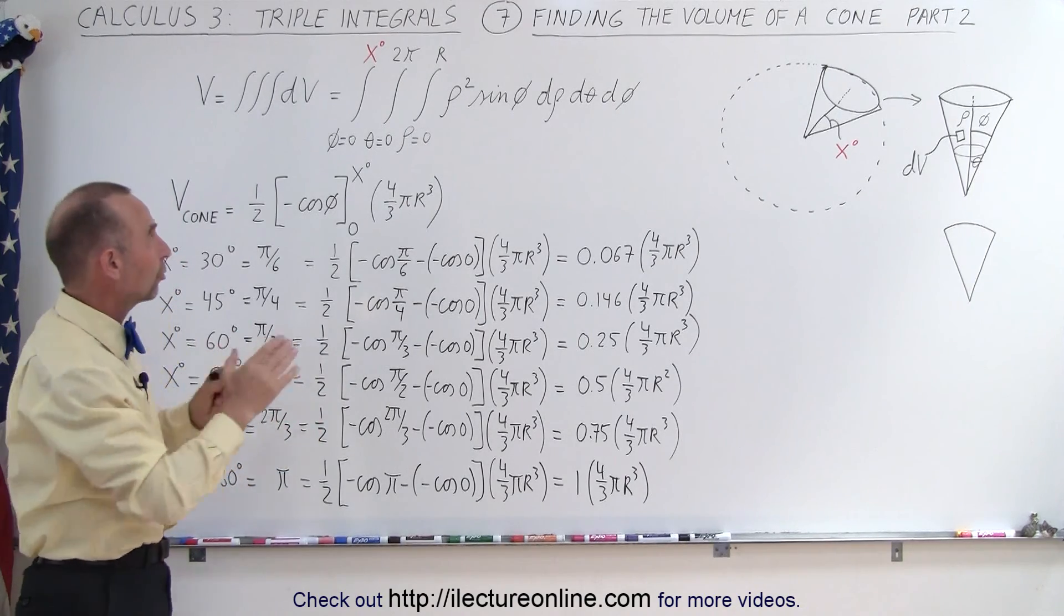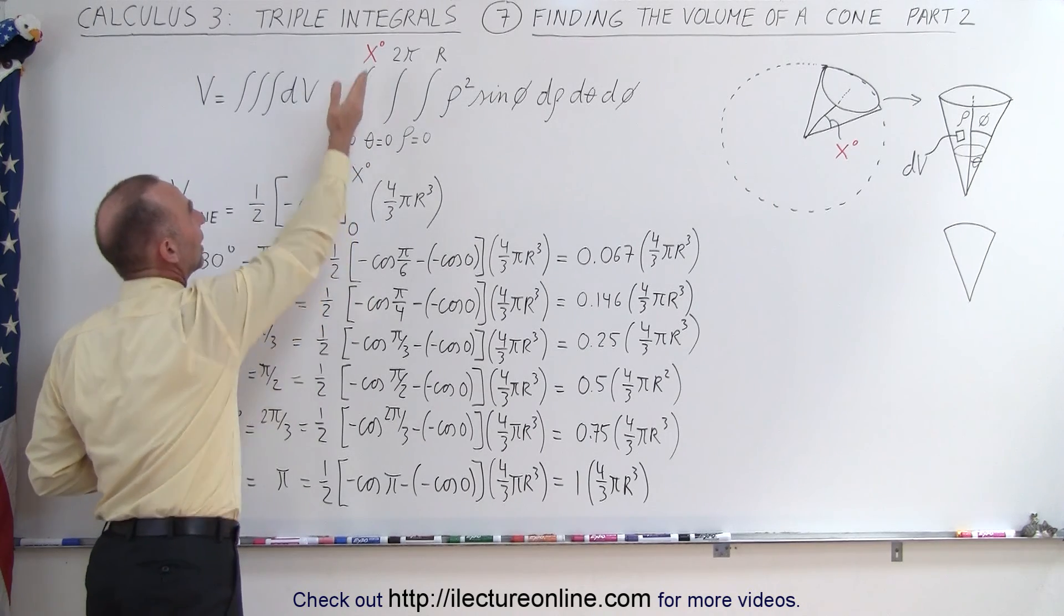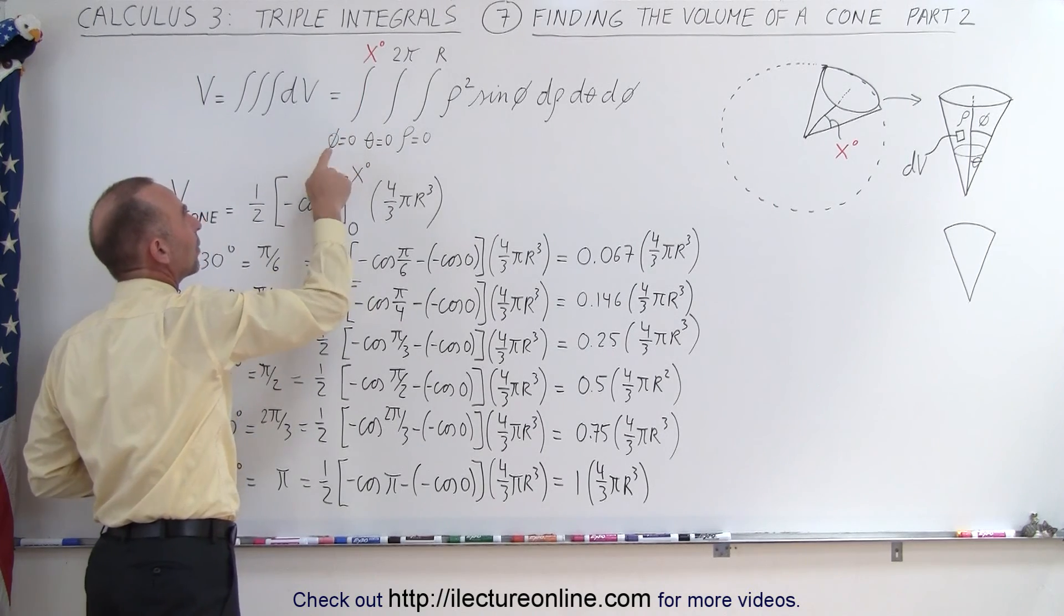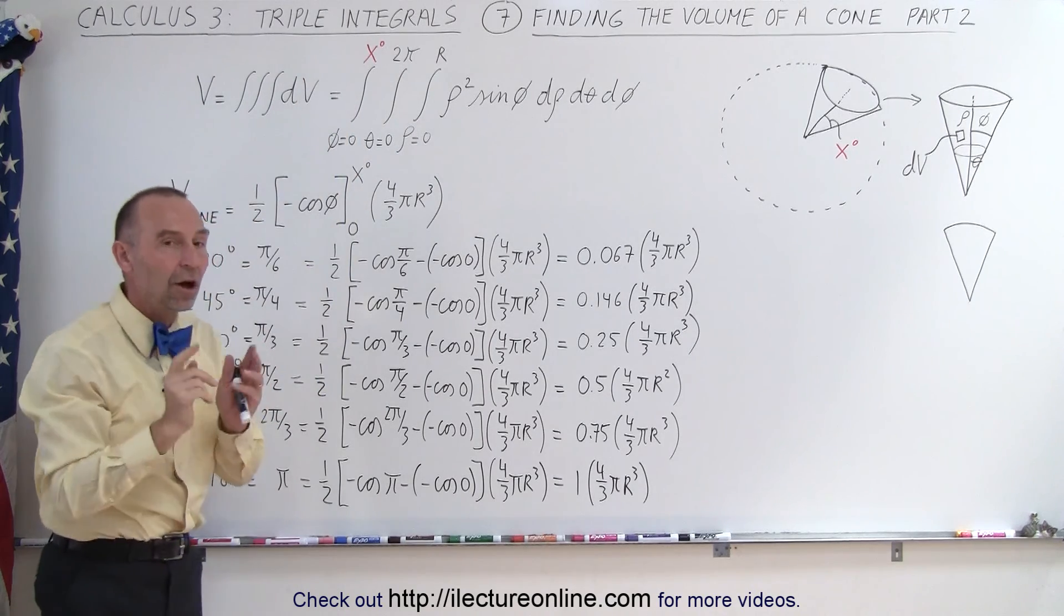The only integral portion, the only one of the three integrals that matters or makes a difference is this final integral right here when we're integrating for the variable phi from zero to whatever the angle is of that cone.